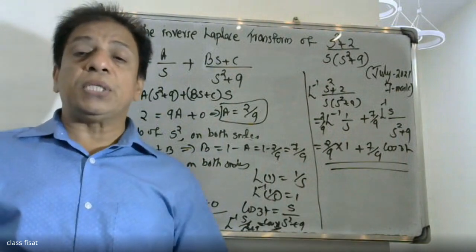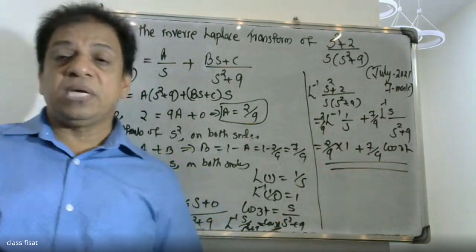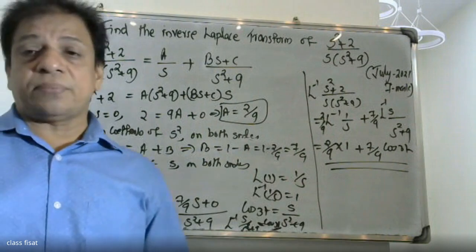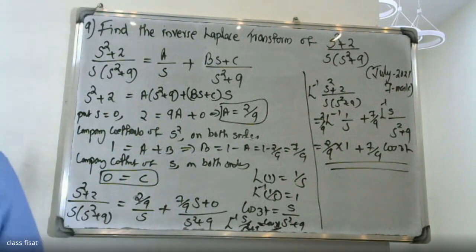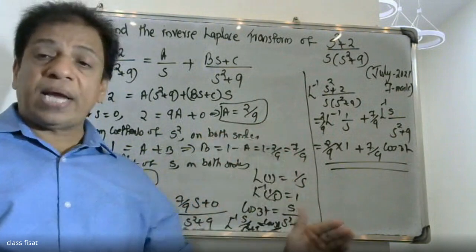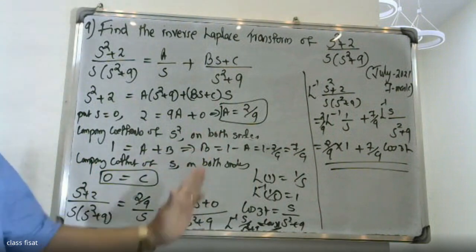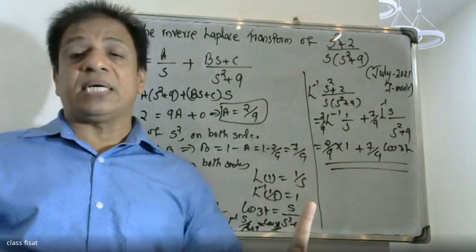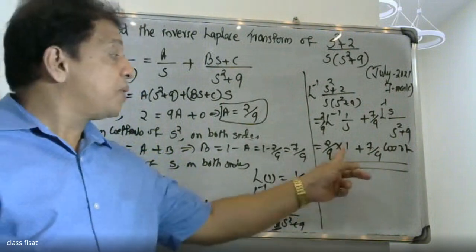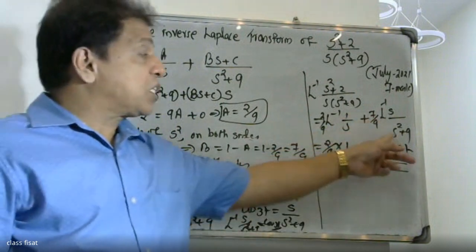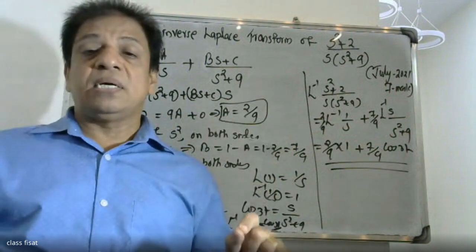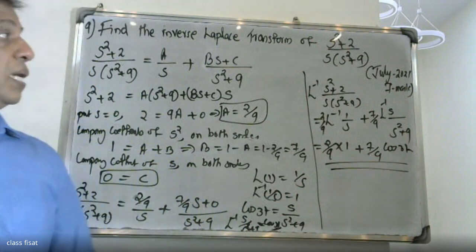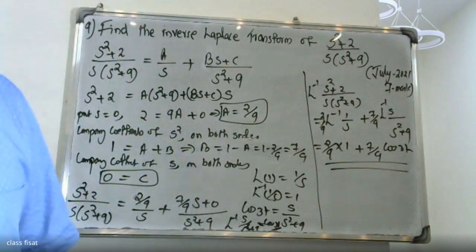How do we compare the coefficients of S² on both sides? The S² coefficient comparison gives A plus B equal to 1, where B equals 7/9 and A equals 2/9. The final answer is 2/9 plus (7/9) cos(3t). This is the answer to the problem.